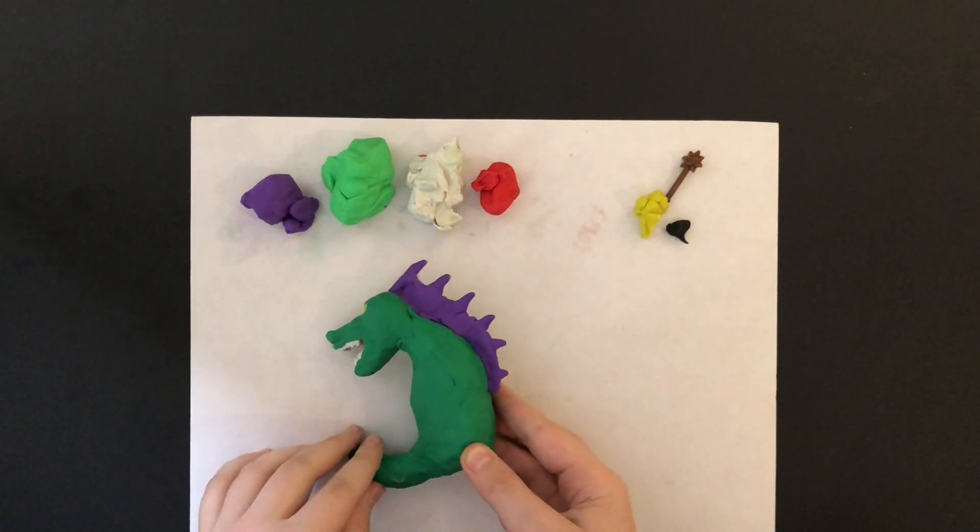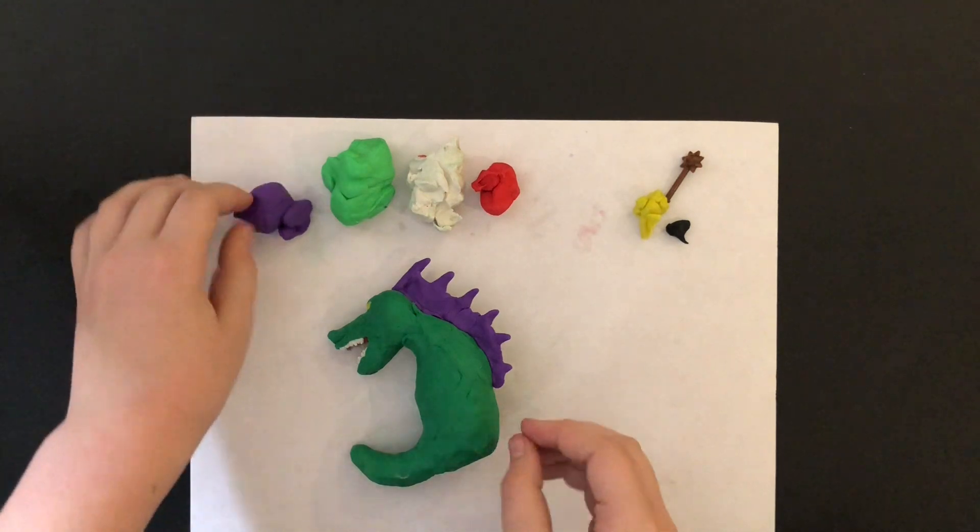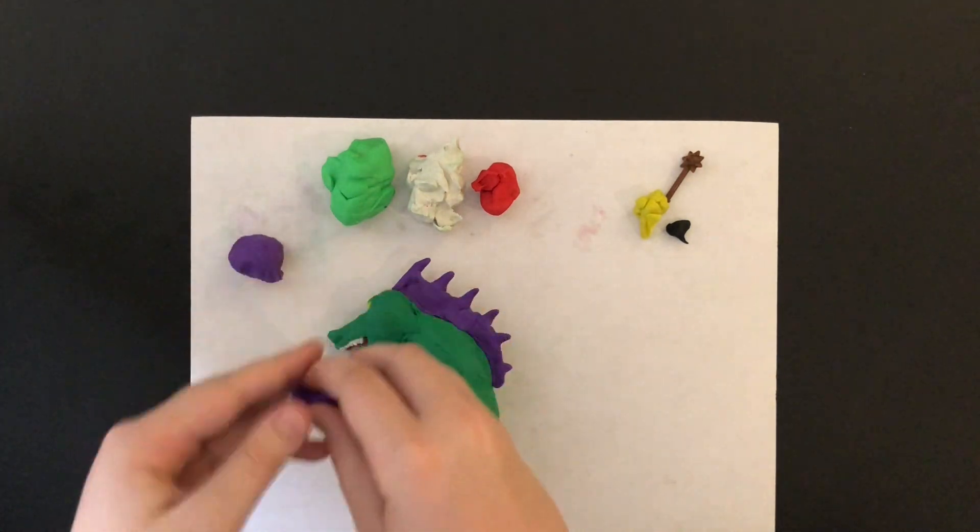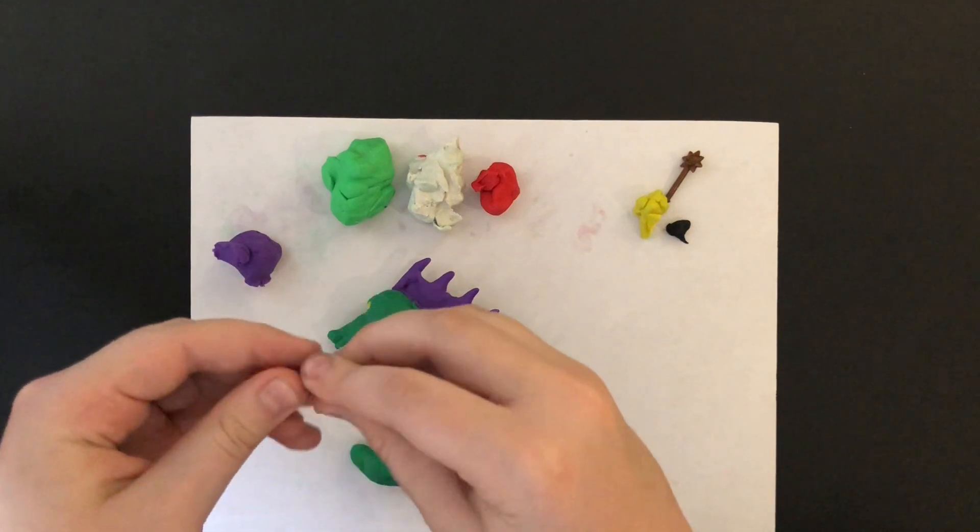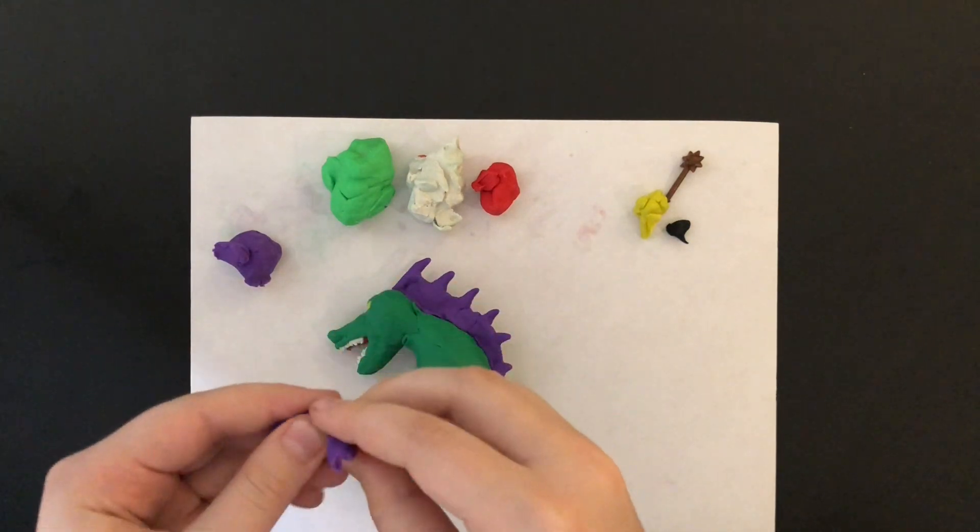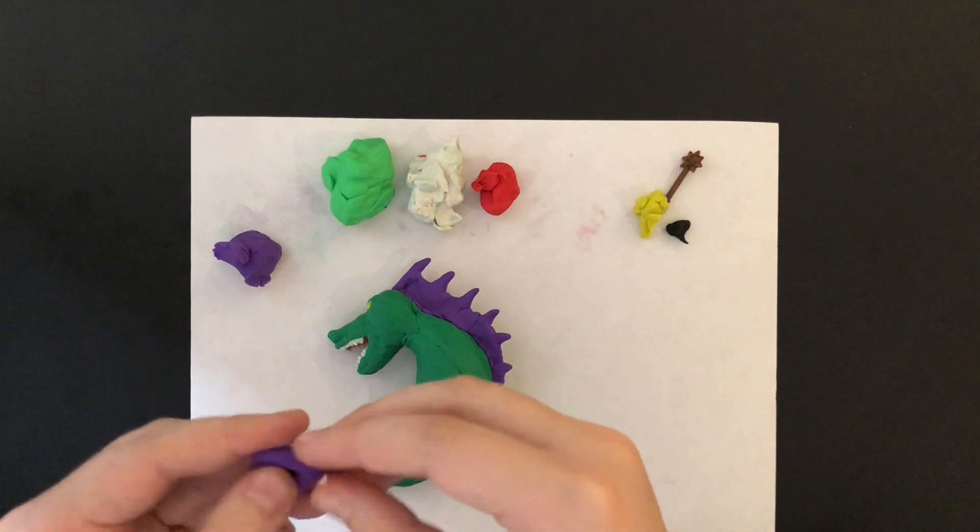Next, I'm going to be making the gill hands. First, you take a piece and then roll it up and curve it. Then you put a little piece here.